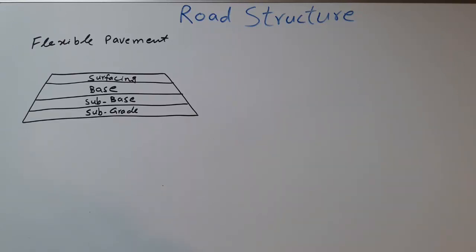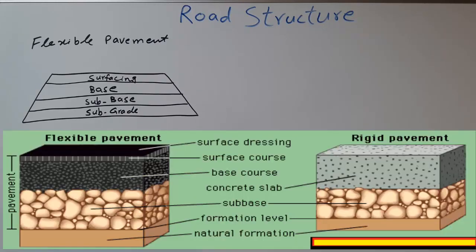The second layer is sub base. This is an important part of the road. We only lay the sub base layer if we have a weak subgrade. In sub base, normally we use stone aggregate. The thickness of sub base is four to six inches.